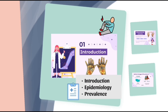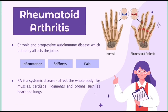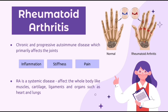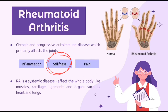So what is rheumatoid arthritis, or RA? Rheumatoid arthritis is a chronic and progressive autoimmune disease which primarily affects the joints, usually the hands and feet, causing inflammation, pain and stiffness. RA is a systemic disease which will also affect the whole body — muscles, cartilage, ligaments, and organs such as the heart and lungs.